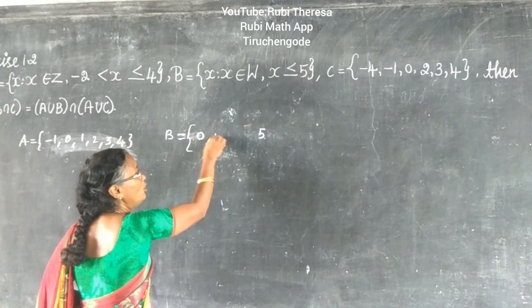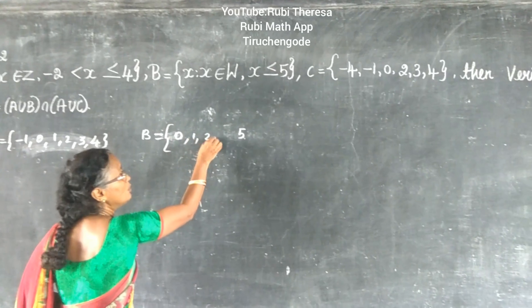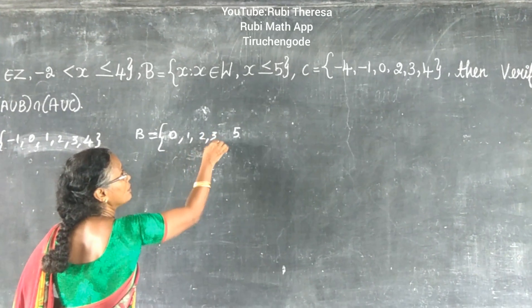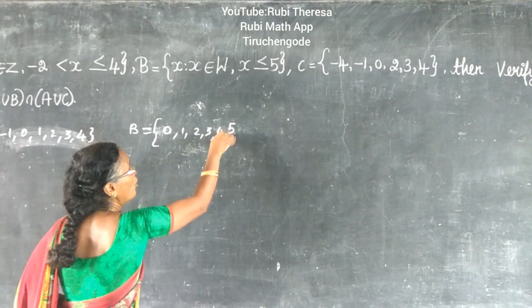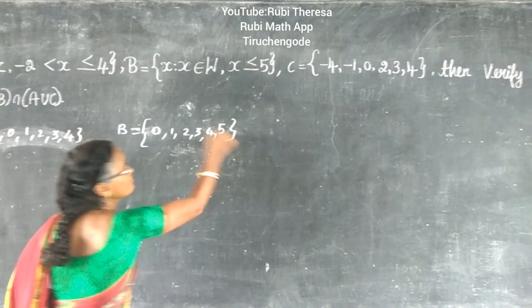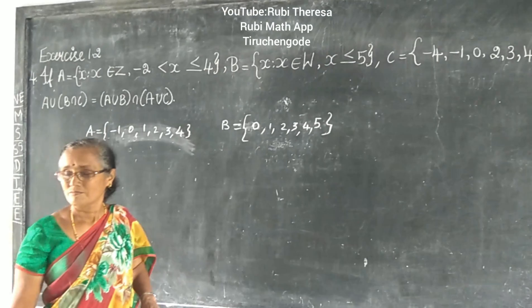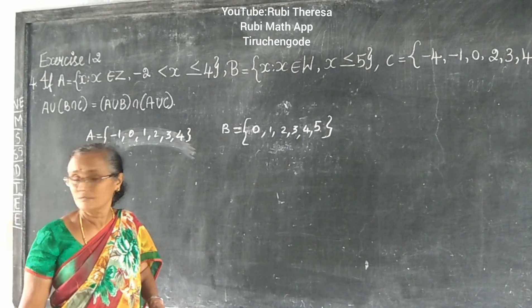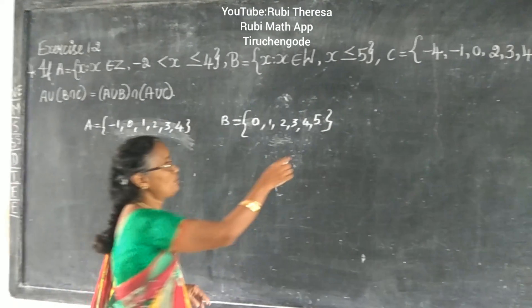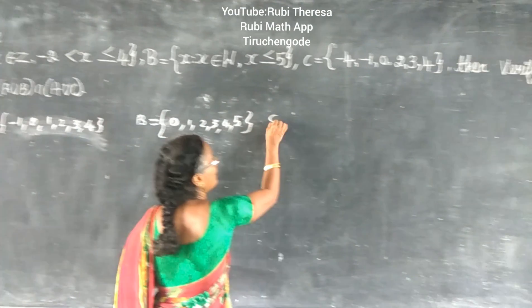So the elements of B are: 0, 1, 2, 3, 4, 5.